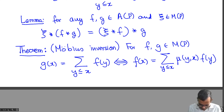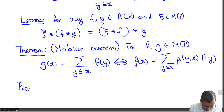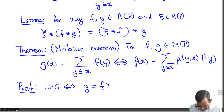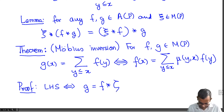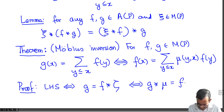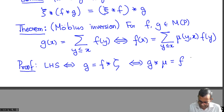Let's see how to prove this. The proof is quite easy since we have all the theory of the incidence algebra in place. The equation on the left says nothing but g = f ★ ζ, where ζ is the element of the incidence algebra which is 1 for all x ≤ y and 0 otherwise. But ζ has a multiplicative inverse, which is μ. So applying that, we get g ★ μ = f, and this equation is nothing but the right-hand side. So the left-hand side is equivalent to the right-hand side.